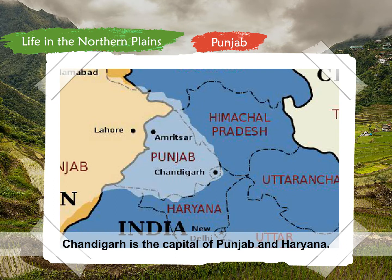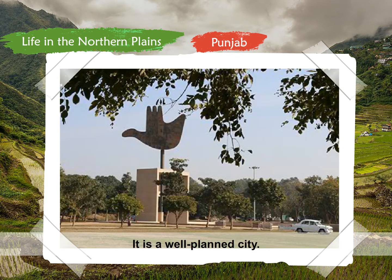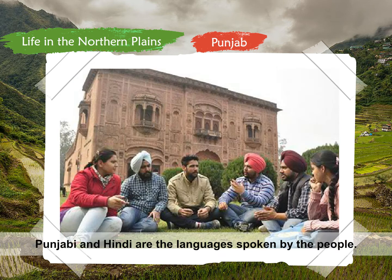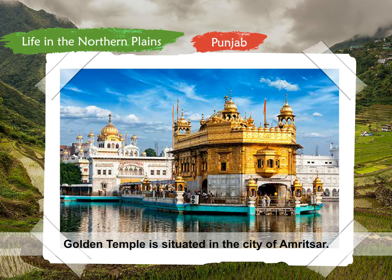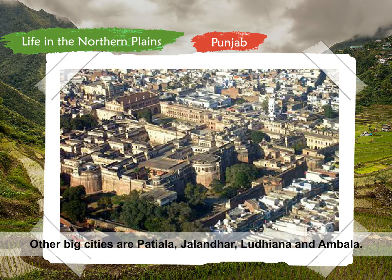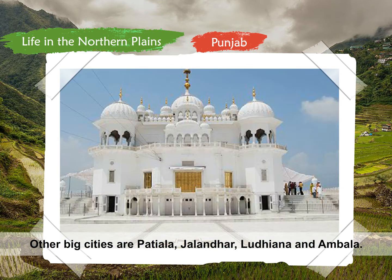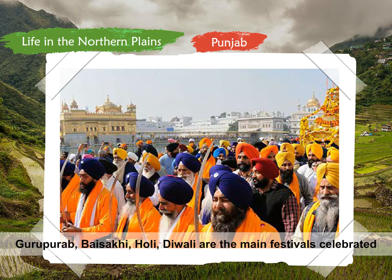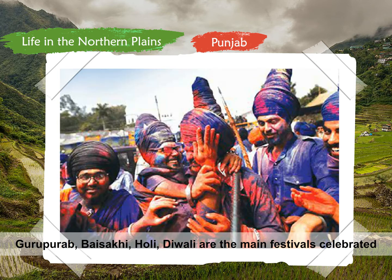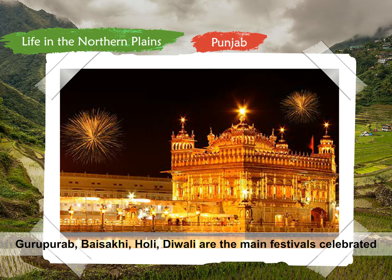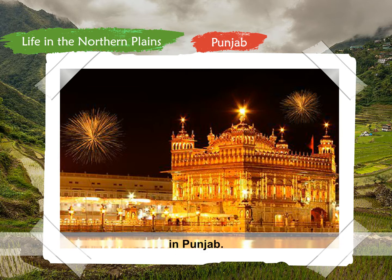Chandigarh is the capital of Punjab and Haryana. It is a well-planned city. Punjabi and Hindi are the languages spoken by the people. Golden Temple is situated in the city of Amritsar. Other big cities are Patiala, Jalandhar, Ludhiana, and Ambala. Gurupurab, Baisakhi, Holi, and Diwali are the main festivals celebrated in Punjab.